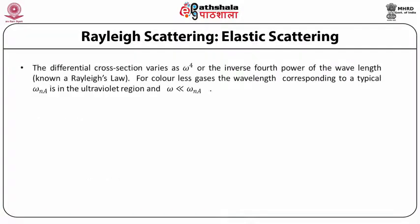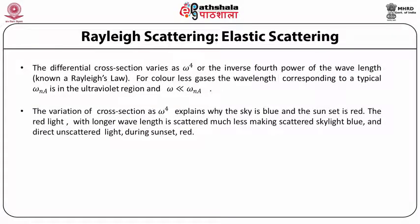For elastic scattering of photons, the Kramers-Heisenberg formula becomes dσ/dΩ = r₀² ω⁴/m² |Σ_n (1/ω³_na)(⟨p·e'^lambda'|n⟩⟨n|p·e^lambda|A⟩ + c.c.)|², valid for ω << ω_na. The differential cross section varies as ω⁴, or as the inverse fourth power of the wavelength, known as Rayleigh's law. For colorless gases the wavelength corresponding to a typical ω_na is in the ultraviolet region, so ω << ω_na holds.